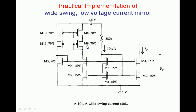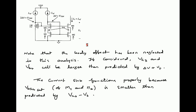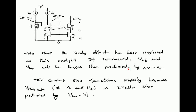This is the practical implementation of the wide swing low voltage current mirror. One thing we have not discussed is the body effect. For M3 and M4, if you observe, the source of M3 and M4 are not at ground. Whenever they are not at ground, definitely body effect will be present. If you consider body effect, then VGS3 and VGS4 — whatever we assumed — are going to be larger than predicted. Till now we took VGS3 and VGS4 as delta V plus Vt, but with body effect they will be somewhat larger than that to carry the same current. This is a minor effect only. This is the end of wide swing cascode current mirror.